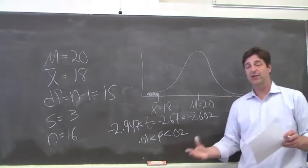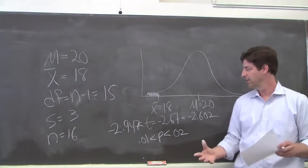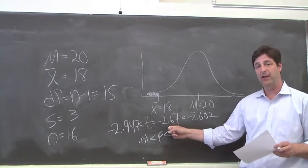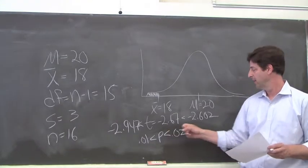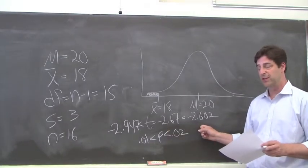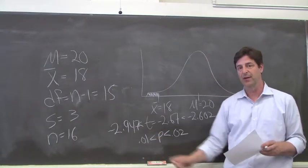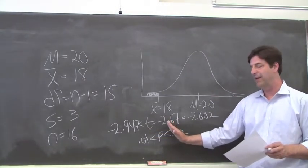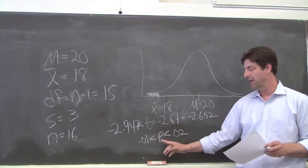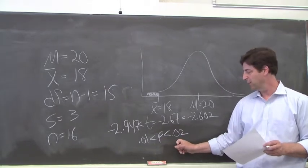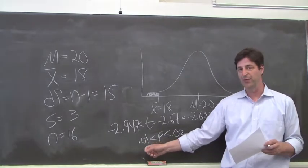The probability is between .02 and .01. Now you'll notice this t-value that we calculated of 2.67 is much closer to 2.602 than it is to 2.947. That means the p-value, the probability of this event occurring by chance, is closer to .02 than it is to .01.